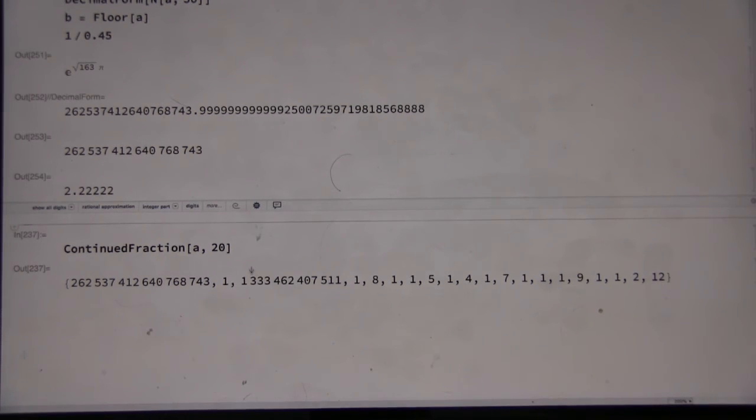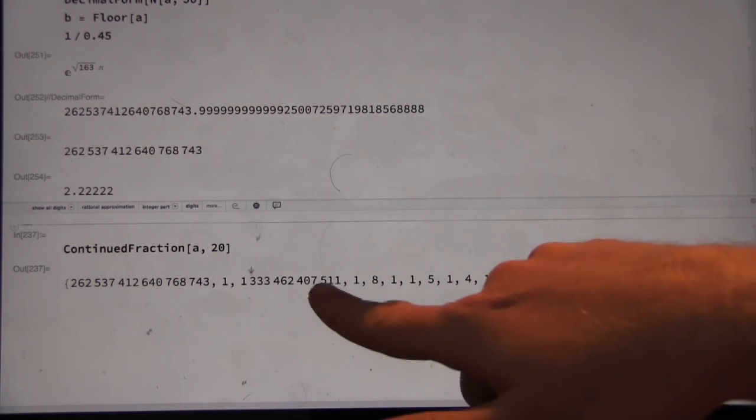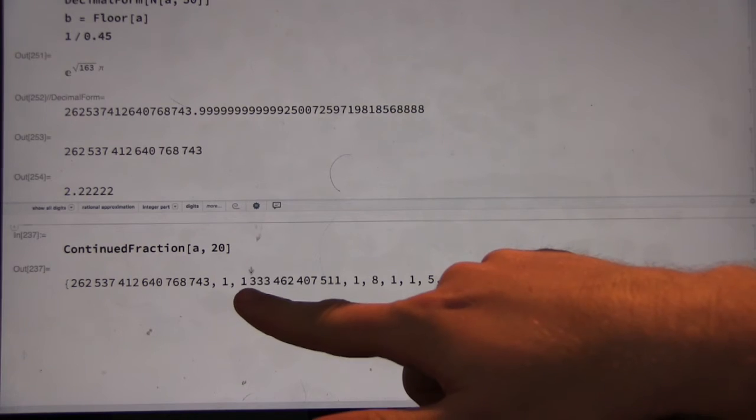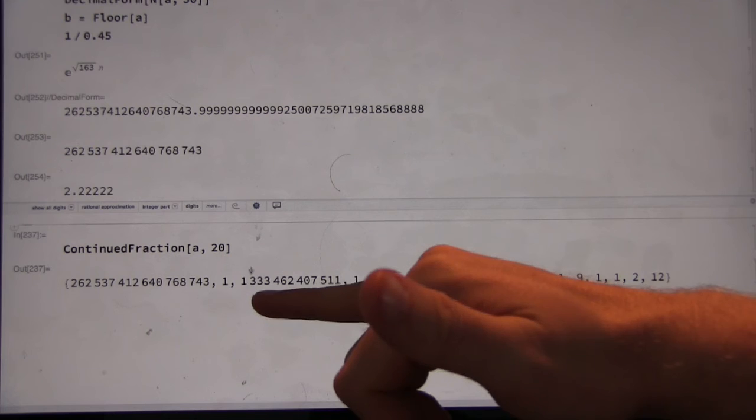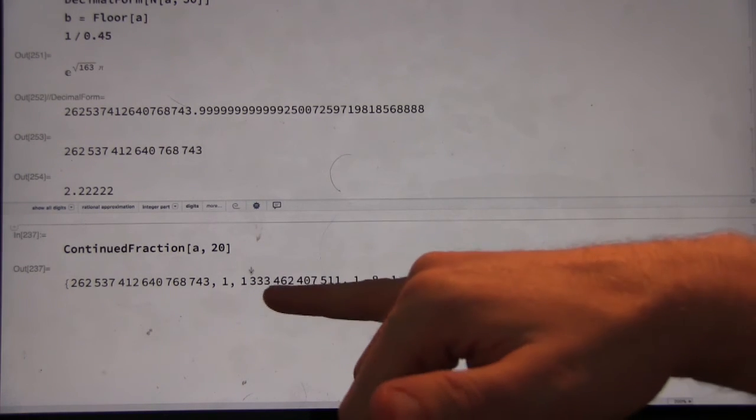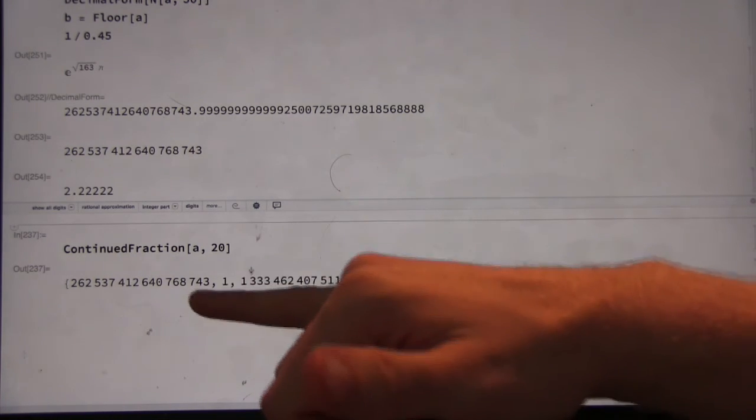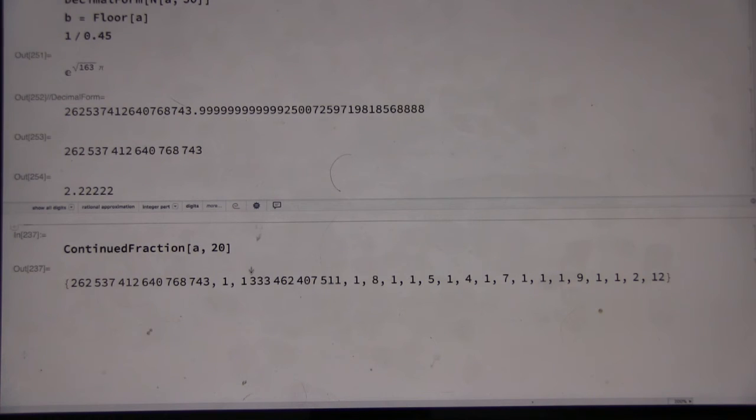So it starts with a 1. Am I still on camera down here? Okay, but then the next number here is, let's see, thousands, million, billion, trillion, 1 trillion. Yep. And so what do you think that number being so large is telling us? The second, essentially the second number in the continued fraction. I mean, it's really the third, but the first one is just the integer part. What do you think that number being so large tells us?